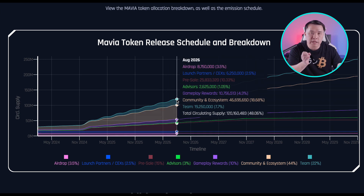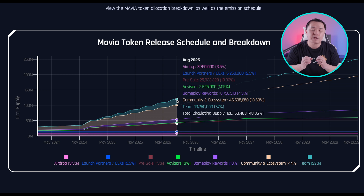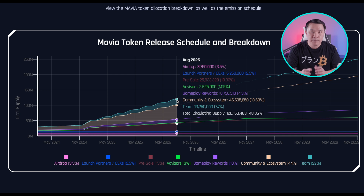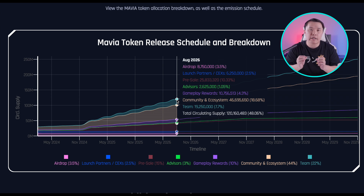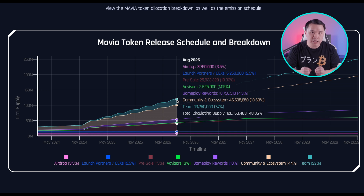As more tokens enter circulation, we're having a dilution in price if there's no increase in demand. It is key to watch these emission and release schedules — it can give us a chance to see where a great entry point might be. If you have a lot of inflation early on, you don't want to buy in at the start because those tokens are going to get diluted. But once all the dilution has occurred and the price is stable, that's probably a good entry if the price isn't too high.